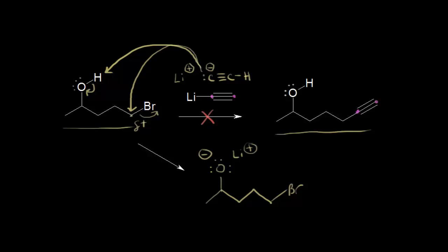The point of a protecting group is that we need to protect this hydroxyl group to prevent it from reacting. If we can somehow protect this group, we can allow our reaction to occur at another portion of the molecule, and then we could remove our protecting group to form our target compound. That's the idea behind it.